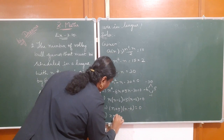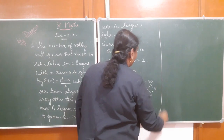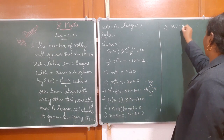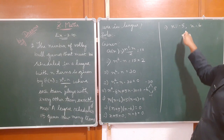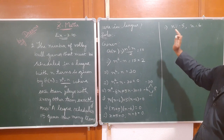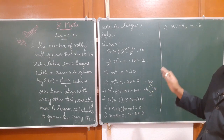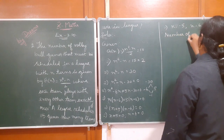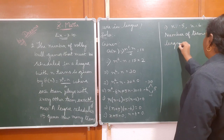Setting each factor equal to zero: n + 5 = 0 gives n = -5, and n - 6 = 0 gives n = 6. Since the number of teams cannot be negative, we take n = 6. Therefore, the number of teams in the league is equal to 6.